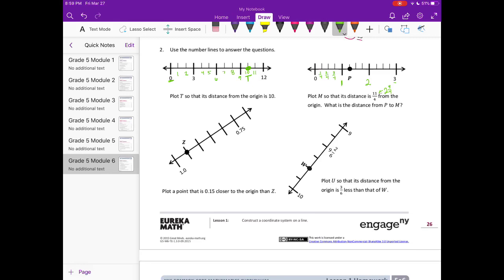P is at 1 and 1 fourth, 1 and 2 fourths, 1 and 3 fourths. Then we have 2 and 1 fourth, 2 and 2 fourths, 2 and 3 fourths. So we're looking for M, 2 and 3 fourths, which would be right here. So there's M.